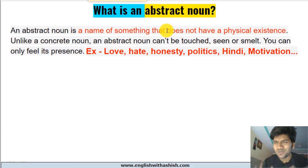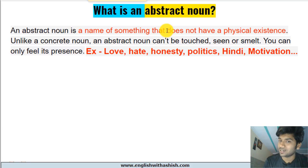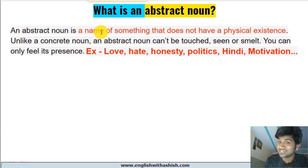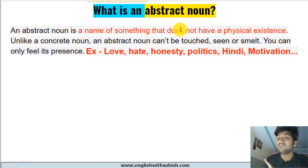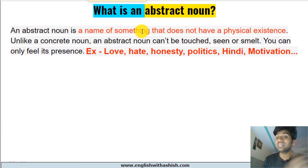Let's understand what exactly an abstract noun is. It's a type of noun. Now, what is a noun? A noun is just a name — a name of something or somebody. What is an abstract noun? An abstract noun is also a name, since it's a noun it has to be a name. It's a name of something that does not have a physical existence, that does not have a physical form.